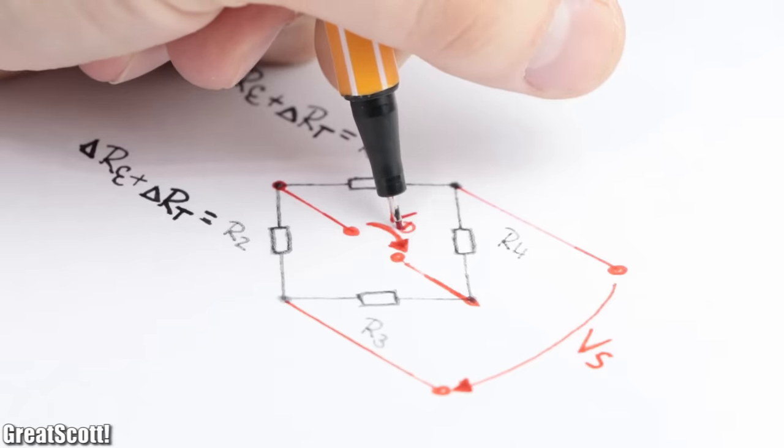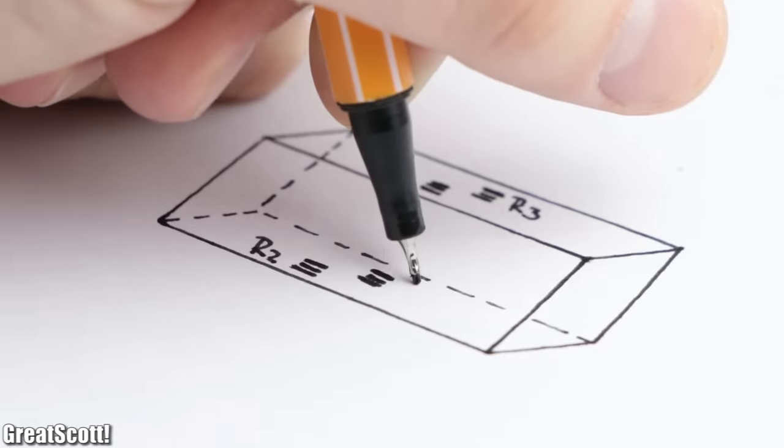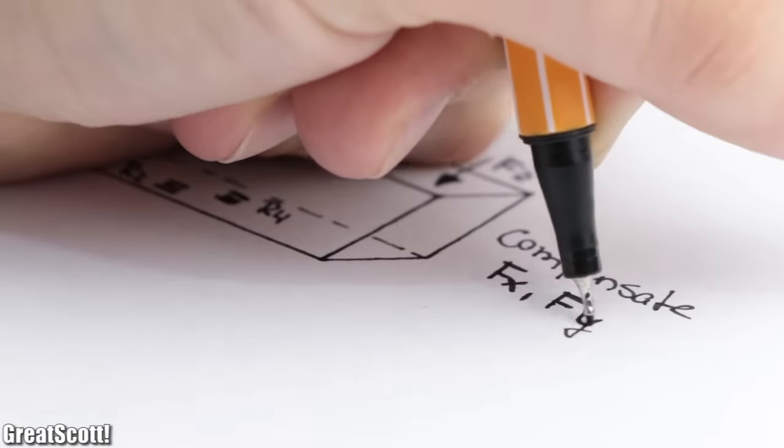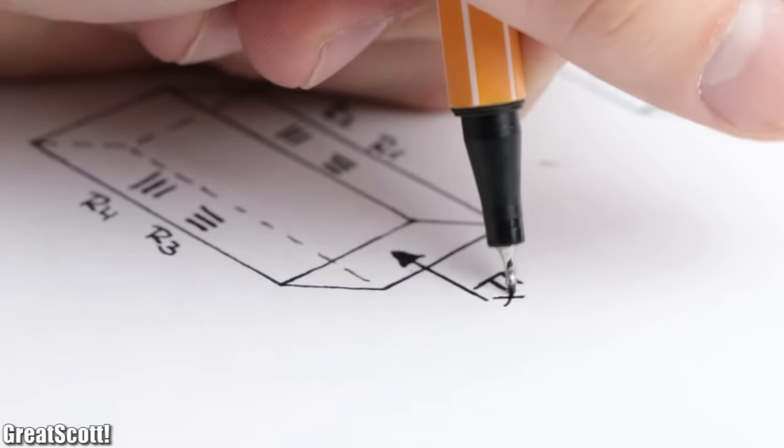and this mistake then gets abstracted by the nature of the Wheatstone bridge. Of course, you could also use four strain gauges to compensate for all kinds of undesired forces, but let's rather stick to the basics for now.